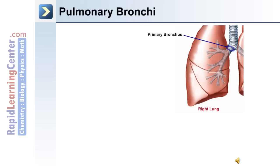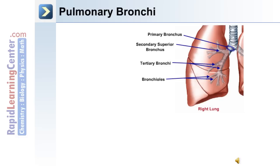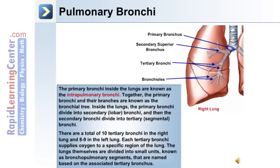Inside the lung, the primary bronchus divides into secondary or lobar bronchi, and the secondary divide into tertiary or segmental bronchi. The tertiary bronchi give rise to bronchioles. The primary bronchi inside the lungs are known as the intrapulmonary bronchi, and together the primary bronchi and their branches are known as the bronchial tree. There are a total of 10 tertiary bronchi in the right lung and between 8 and 9 in the left lung.